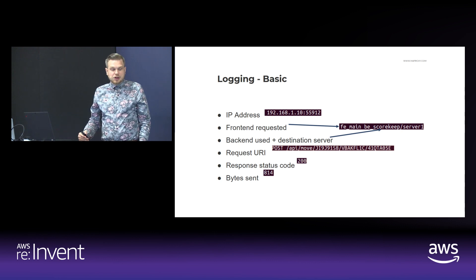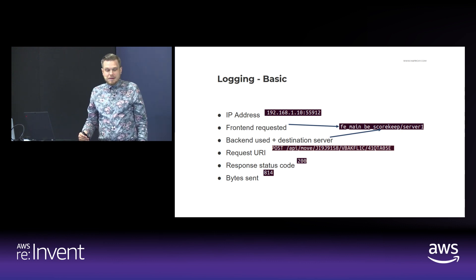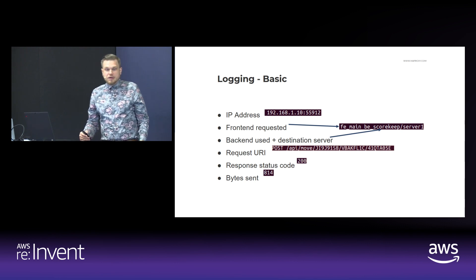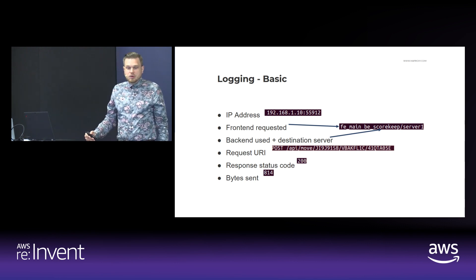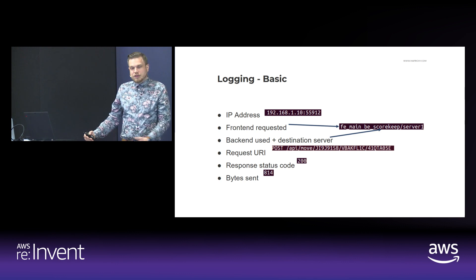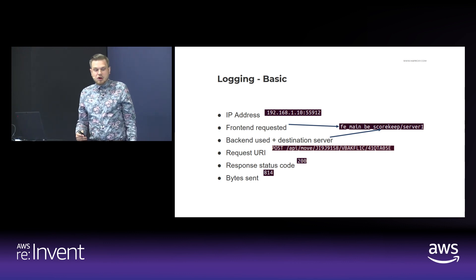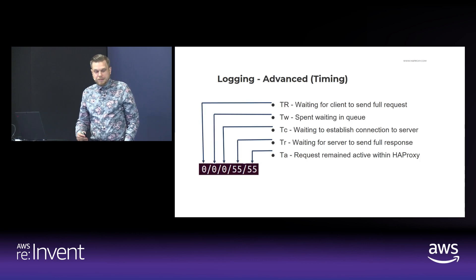In this particular example, we can see that the front end was FEMain and the back end was BEScorekeep, and the server that it was processed to was Server 1. We can see that the request method was a POST sent to an API endpoint, and the response status code was 200 with 814 bytes returned.